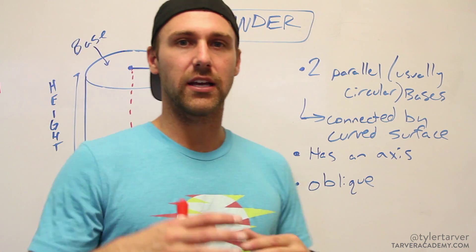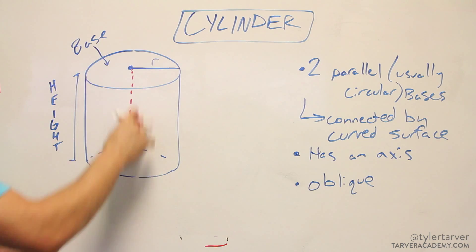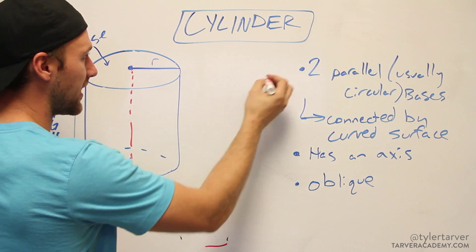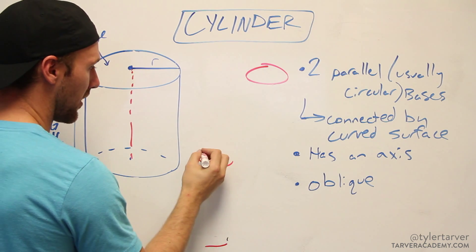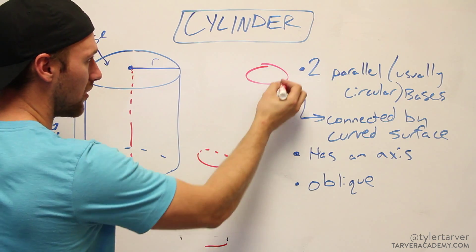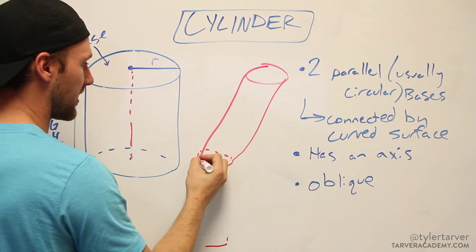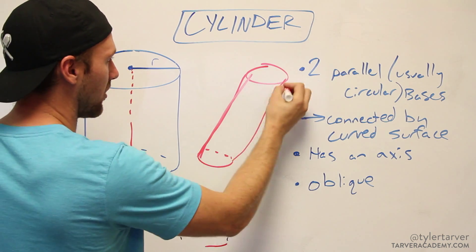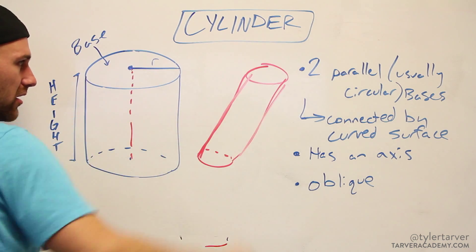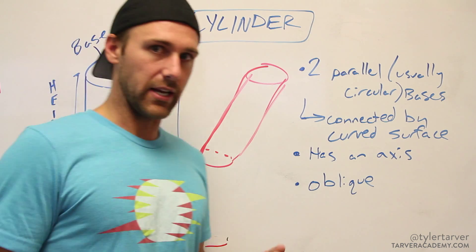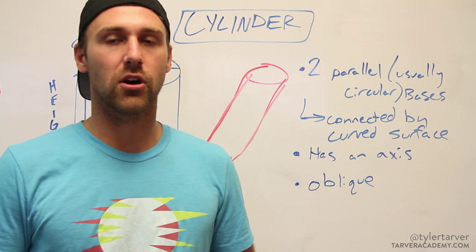A cylinder can also be oblique. Oblique means that while the bases are still parallel, they're shifted — like at an angle, as if you took a regular cylinder and slid it over. That's the main term you'll see with regards to cylinders.